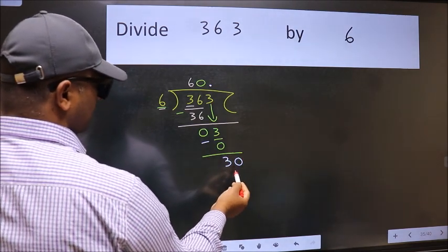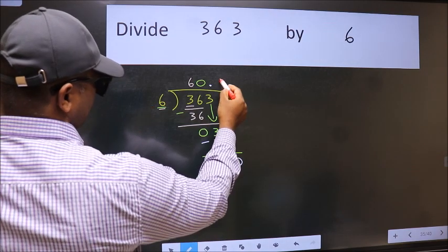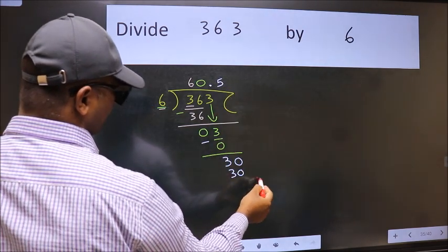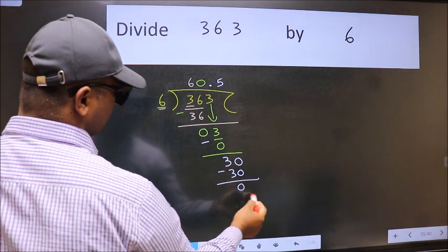When do we get 30 in 6 table? 6 times 5 is 30. Now we subtract. We get 0.